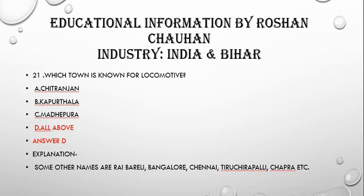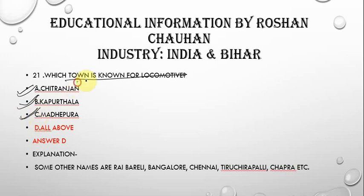The next question is: which town is known for locomotive production? The correct answer is all of the above — Chittaranjan, Kapurthala, and Madhepura all have locomotive factories and are known for the locomotive industry.